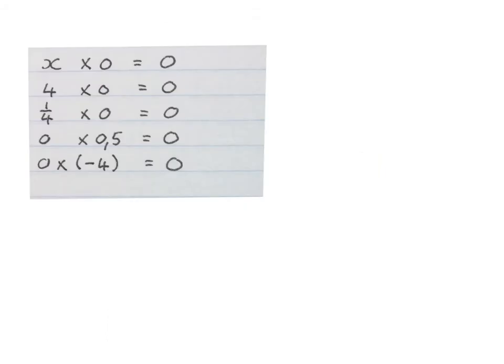Next, if you multiply any value by 0, the answer is 0. x times 0 is 0, and 0 times any value is still 0.